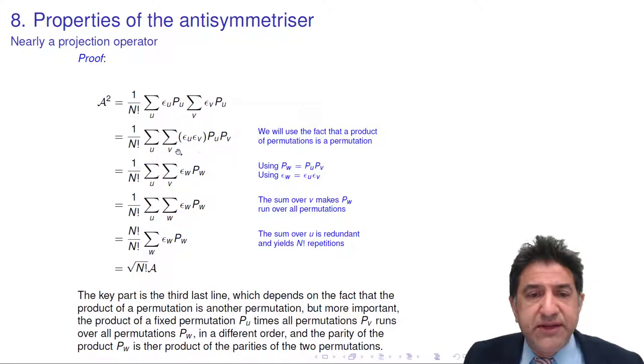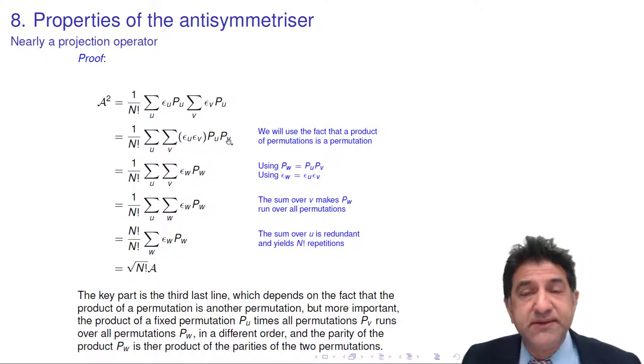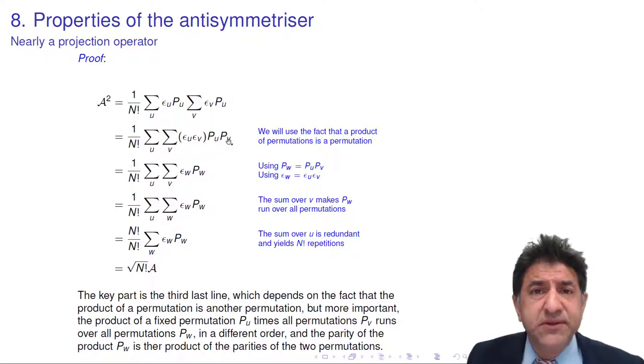Now, essentially what we have here is a sum over two lots of permutations. And here is a product of permutations. I'm going to rely on the fact that if you do one permutation and then another permutation, the result is a third permutation. So the product of two permutations is a third permutation. I'm going to call that pw.